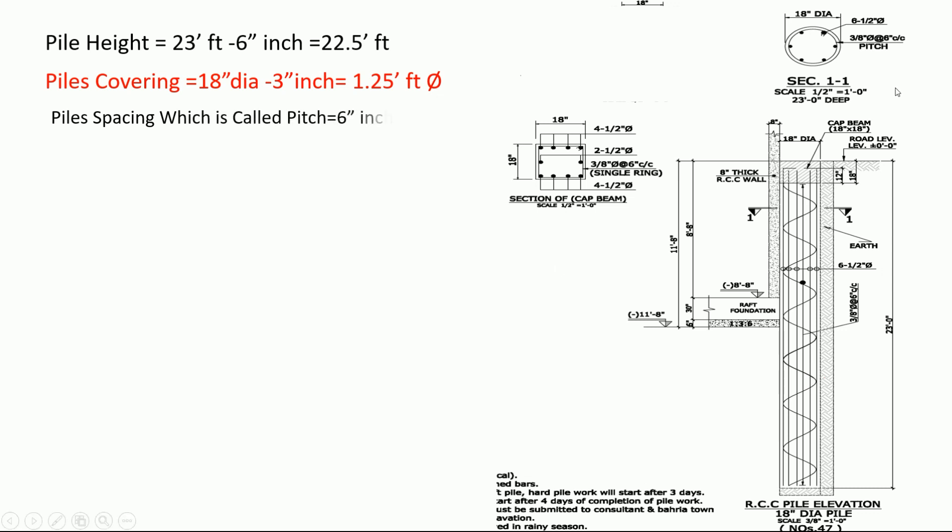Now we have pile spacing which is called pitch. Here is pitch, the gap: 6 inches. To convert to feet, 6 inch divided by 12 inch equals 0.5 feet. Number of turns: we divide height by spacing, 22.5 divided by 0.5, which gives 45 turns.